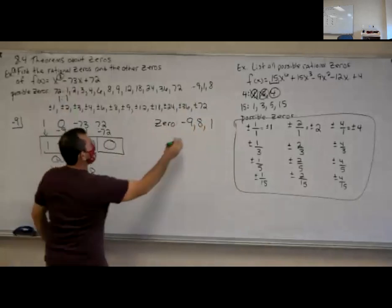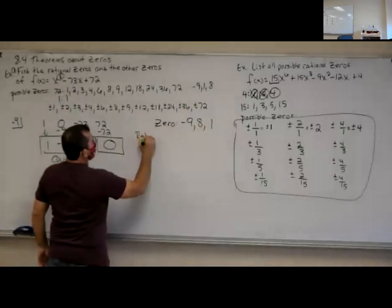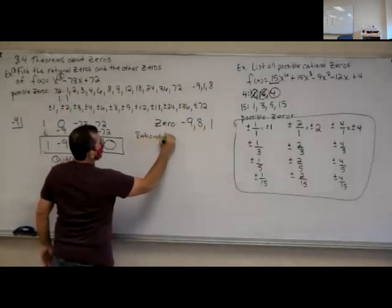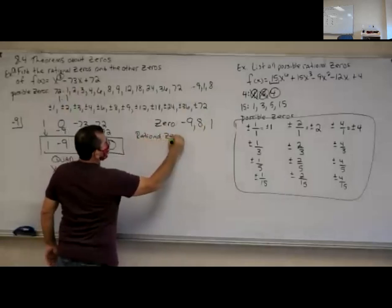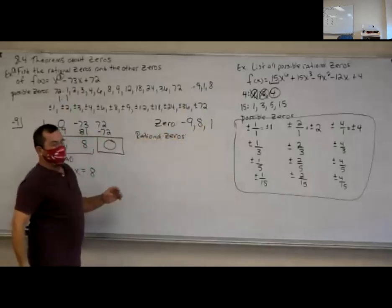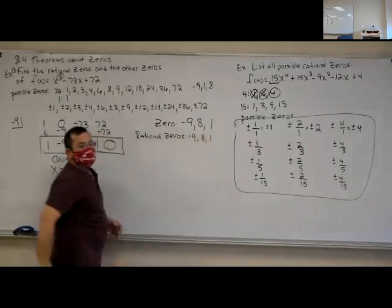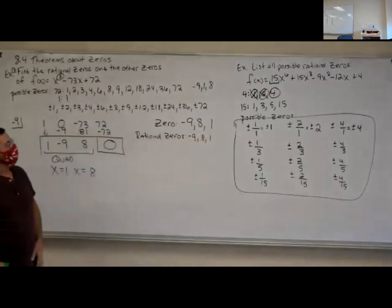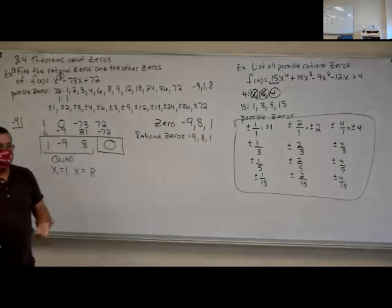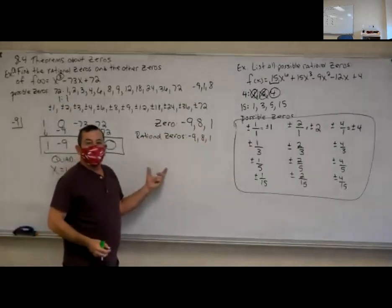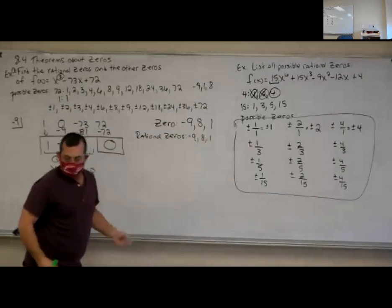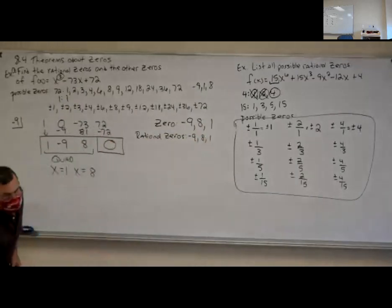So all of these zeros are rational zeros. It's going to give you rational zeros, which would be all three of these. Now, if I would have gotten radical answers or imaginary answers, those would have been called other zeros. My next one will have some of those for you.